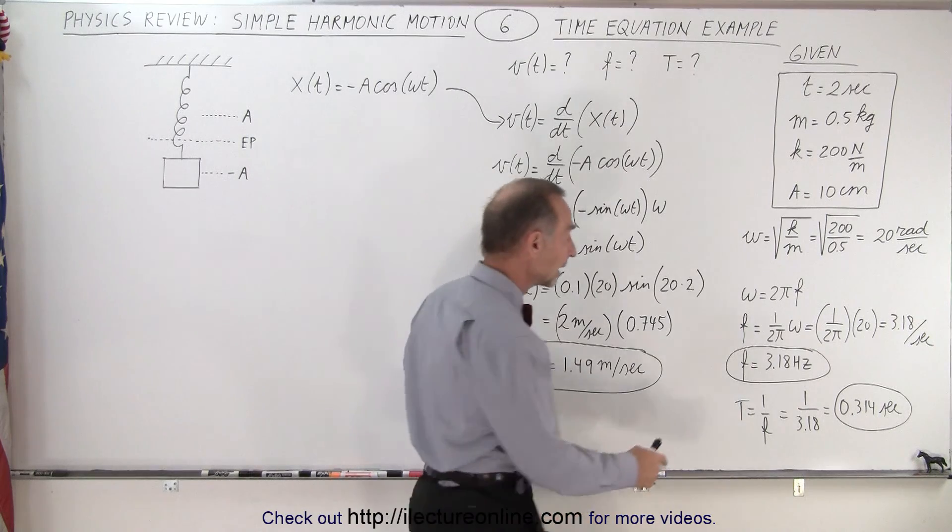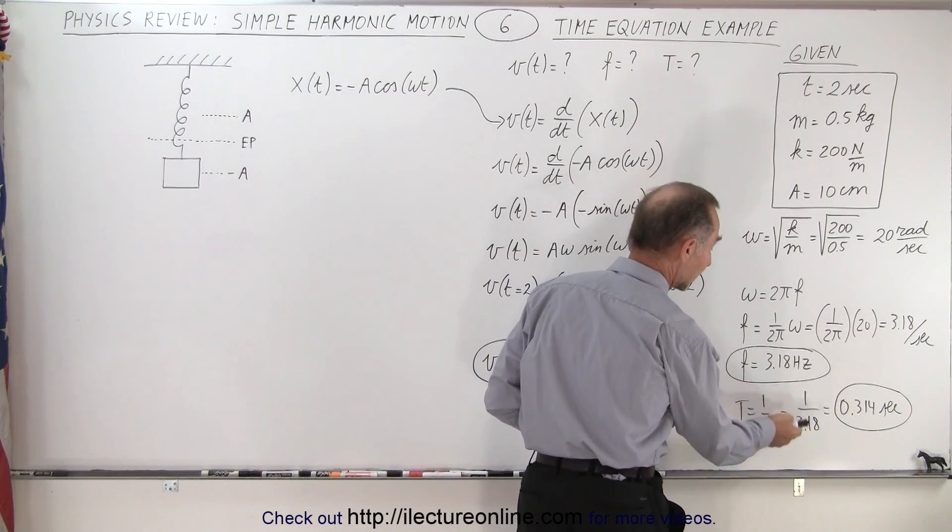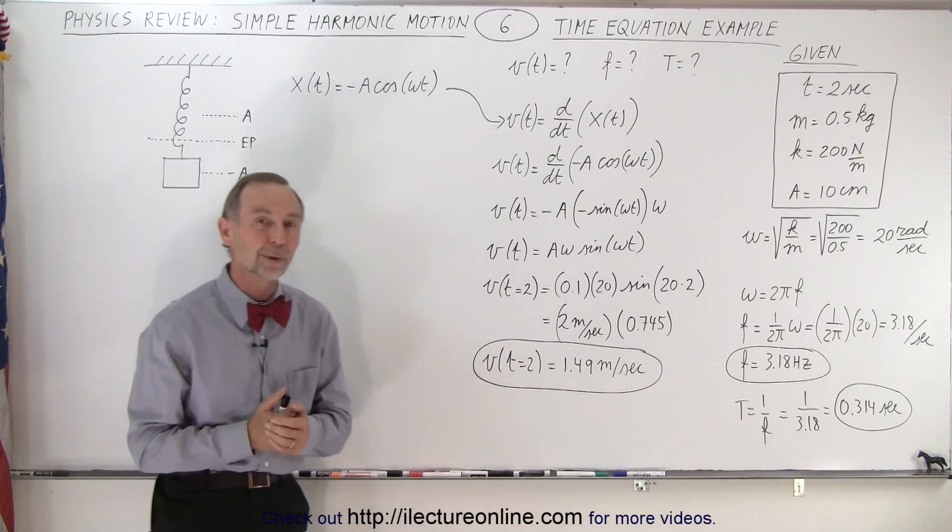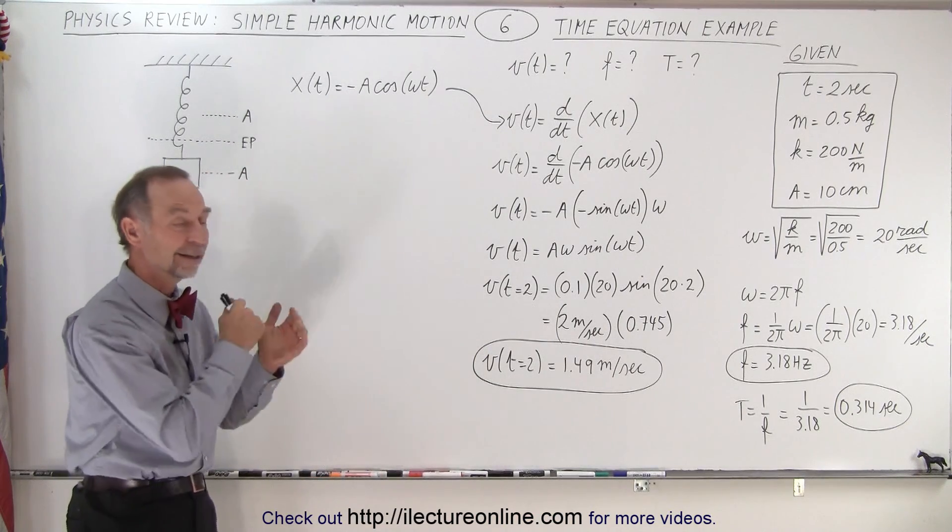And finally to find the period, we take the inverse of the frequency. So we take the inverse of that and end up with one oscillation takes 0.314 seconds. And that is how it's done.